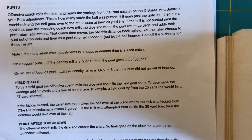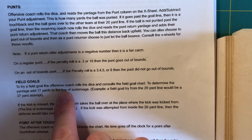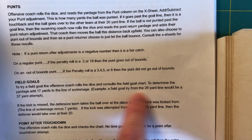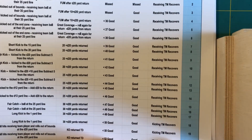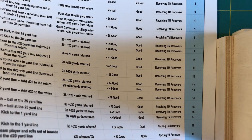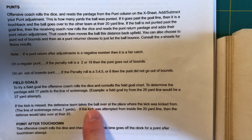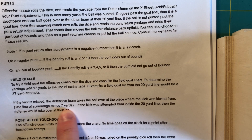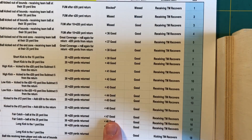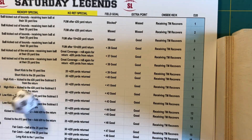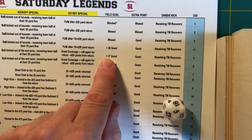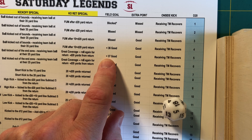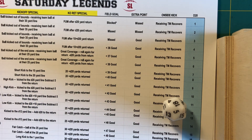Next, field goals. For yardage, you add 17 to the line of scrimmage — a field goal try from the 20-yard line would be a 37-yard attempt. If the kick is missed, the defensive team takes over the ball at the place where the kick was kicked from, line of scrimmage minus 7 yards. I rolled a 5 from less than 37 yards — it's good. Pretty straightforward.